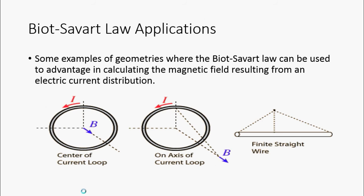Some of the applications of Biot-Savart's law are for different geometries, such as the center of the current loop where we can calculate the magnetic field intensity, on an axis of the current loop, or at any position around the finite straight wire.